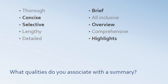A summary is something that is — hopefully you picked out these terms — concise, meaning it's to the point. It's selective; it only includes what's most important. Summaries are brief, at least relative to the original text. Summaries provide an overview, a bird's eye view of what you're looking at. And they only hit the highlights. These are the most important qualities that one would associate with a summary.